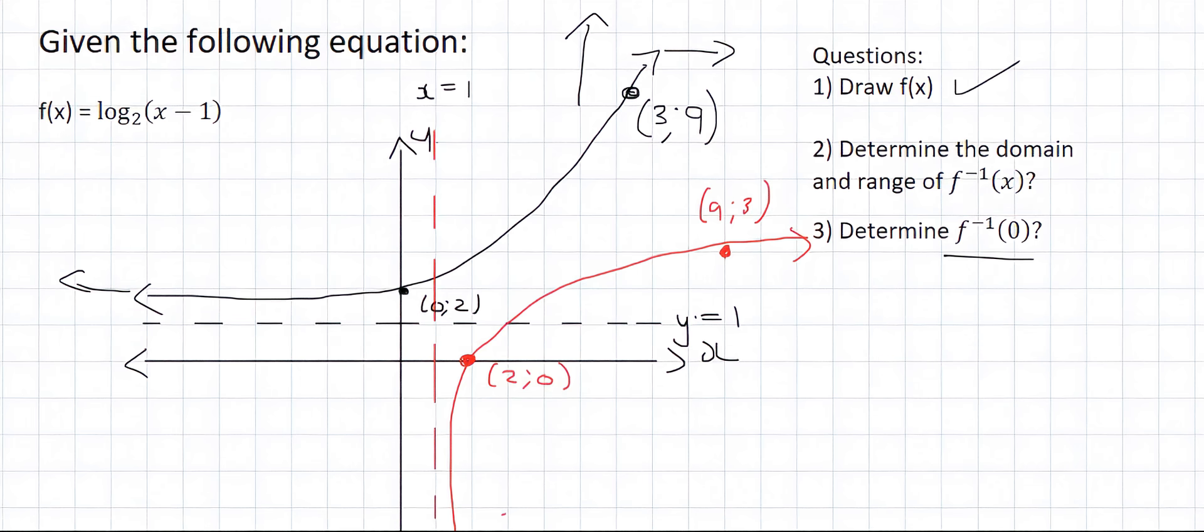And then lastly, number 3, determine the y value of the inverse when x is 0. Remember, that's always the place of x inside there, but this whole thing over here is usually the y value. So it's the y value of the inverse when x is 0. So we go to the inverse, which is the exponential, and we look where the x value is 0. Well, that's over here. And what's the y value there? It's 2. So that's the answer. Because they're saying here, determine the y value when x is 0 for the inverse. That's because of that minus 1 over there. And so the y value there is 2.